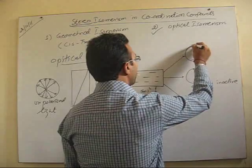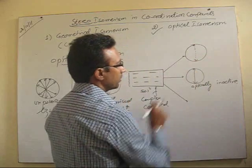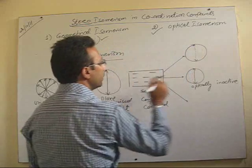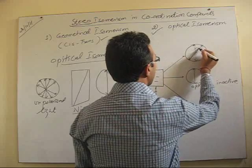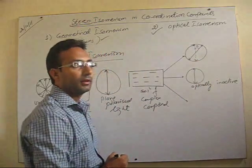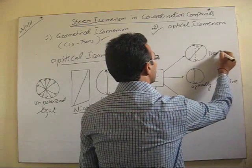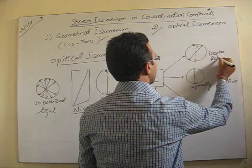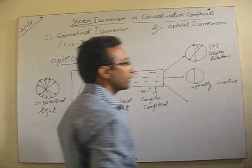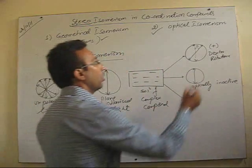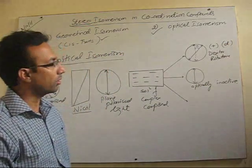In the second case, if the plane polarized light is rotated towards the right by an angle alpha, then such substances are called dextrorotatory, represented by a plus sign or small 'd'. Remember, not capital D but small d.